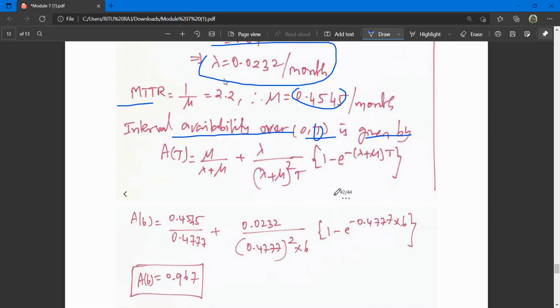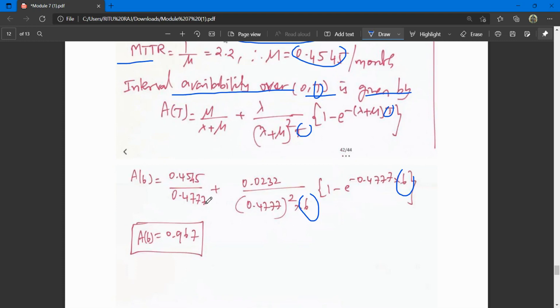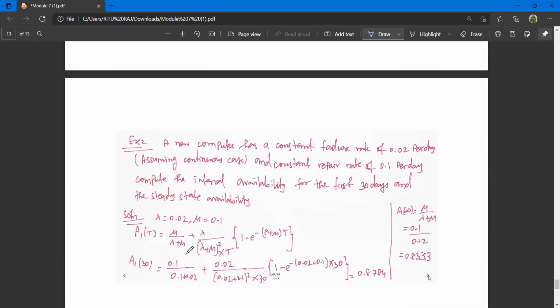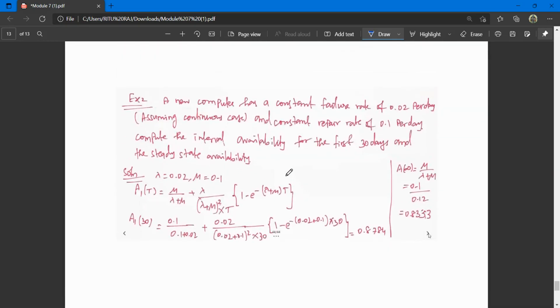Here t is 6. Wherever there was t, we put 6 in the formula. When we put the values, we get probability for 6 months equals 0.967. This is the answer.